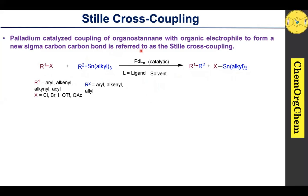The Stille cross-coupling reaction was discovered by John Stille in the late 1970s. According to this reaction, an organic electrophile reacts with an organostannane in the presence of palladium catalysis, which produces a new carbon-carbon coupling product along with a tin byproduct. Here you see that R1 can be aryl, alkynyl, or acyl, and in place of X, either chlorine, bromine, iodine, triflate, or acetate.